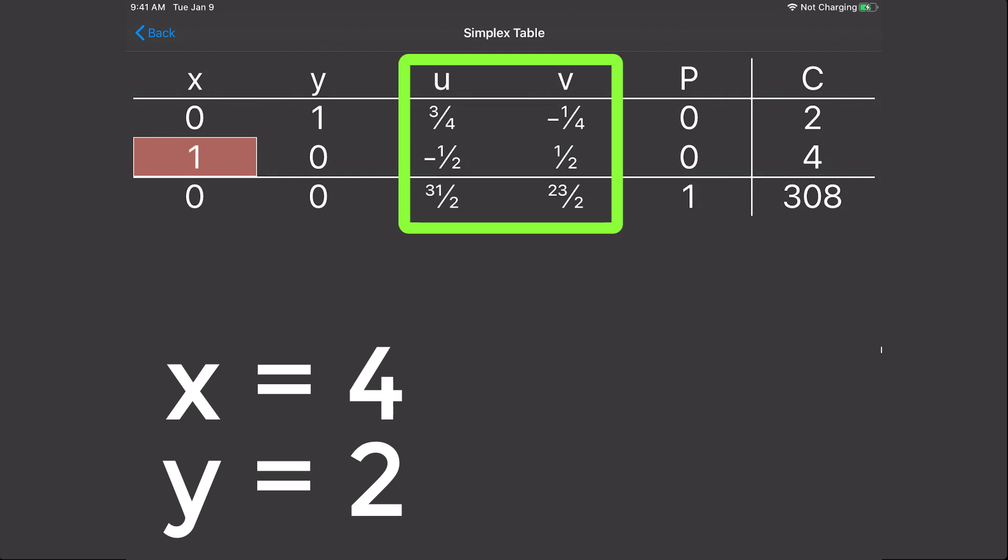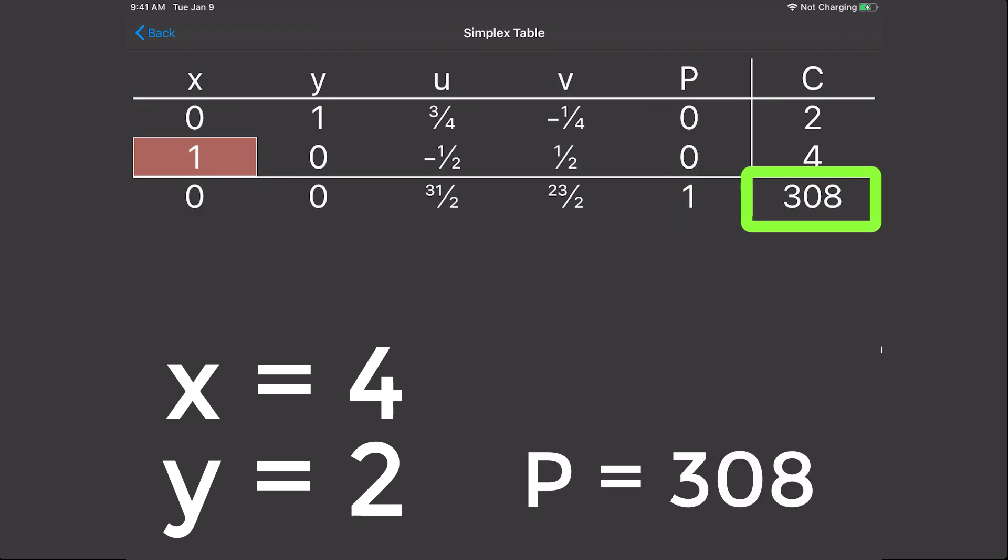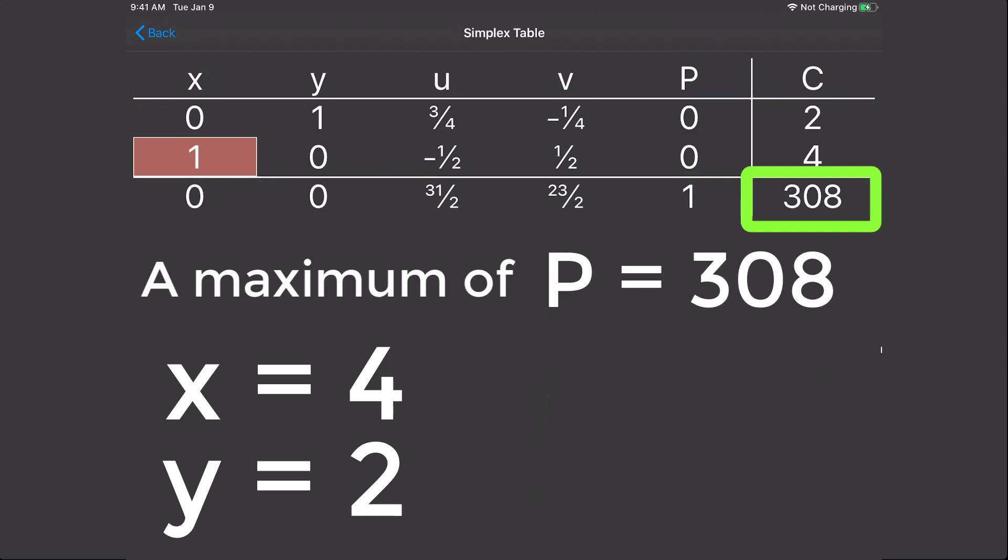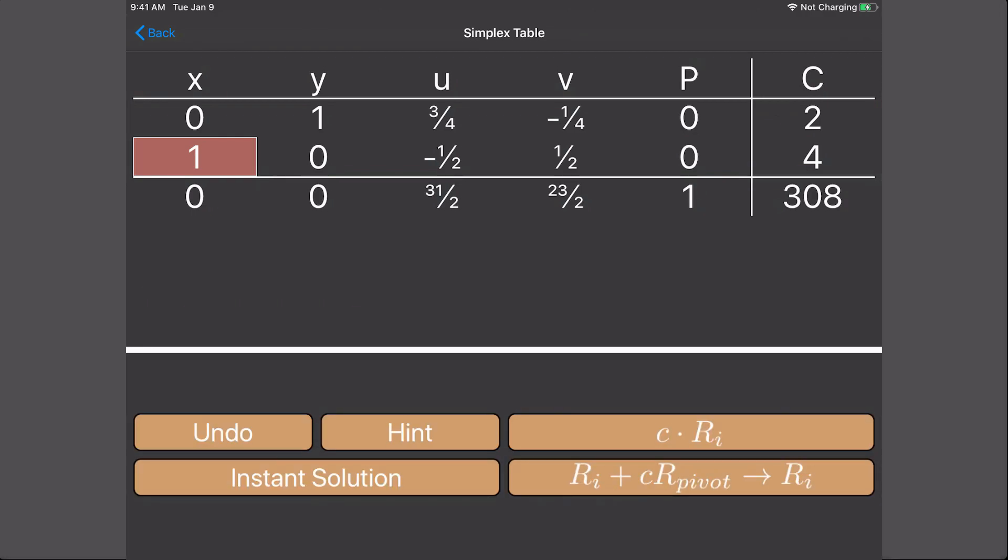But if your variable X or Y were a junk column, then they would have a value of 0. And finally, P is a unit column, and it always should be a unit column. You read across and you get P equals 308. Now the final answer is going to be we have a maximum of 308 at the point X equals 4, Y equals 2.